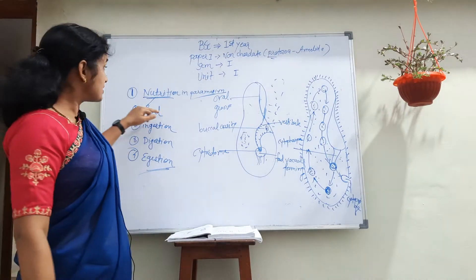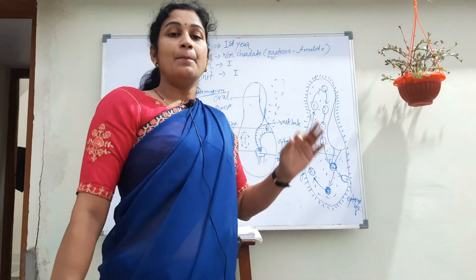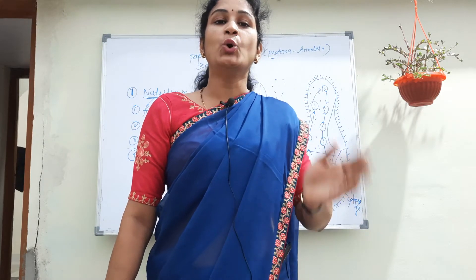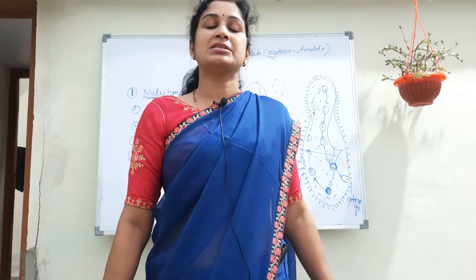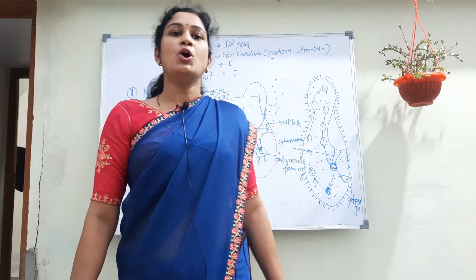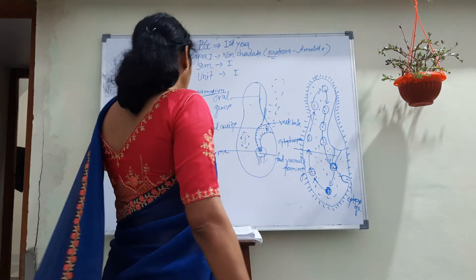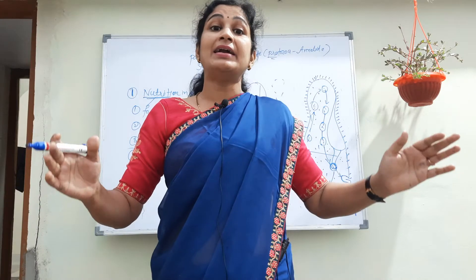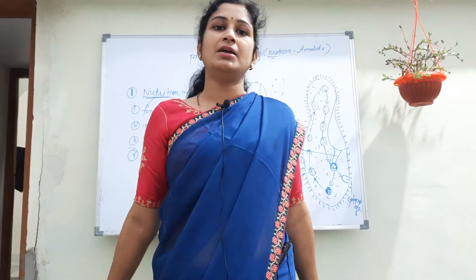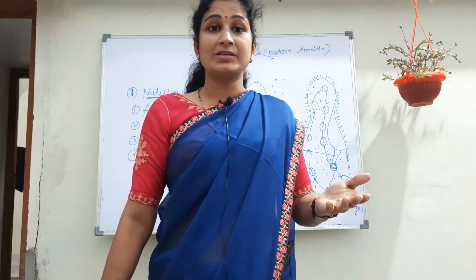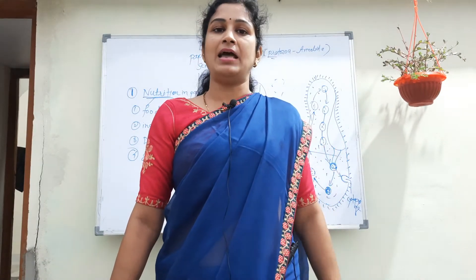Now discussing about the food of Paramecium. Paramecium is an omnivorous animal — omnivorous means those animals that eat plants as well as the flesh of animals. The food of Paramecium consists chiefly of bacteria that float on water, and also some algae, protozoa, diatoms, and bits of plant and animal material.